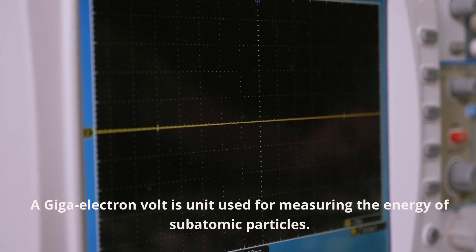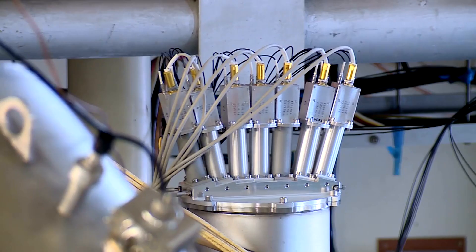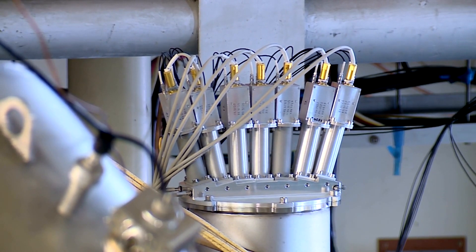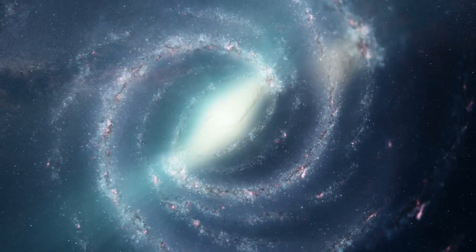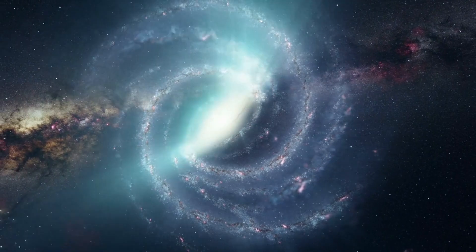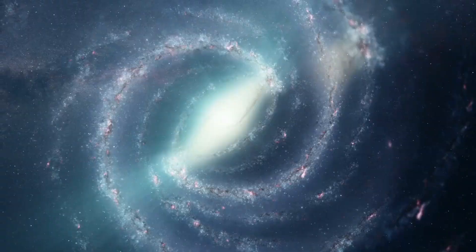A giga-electron volt is a unit used for measuring the energy of subatomic particles. One giga-electron volt is equal to 10^9 electron volts. The Large Hadron Collider, or LHC, the most powerful particle accelerator to date, operates at energies up to a few tera-electron volts, or TeV—orders of magnitude lower than the Planck energy. Assuming microscopic black holes can be formed in high energy particle collisions, they would likely evaporate almost instantaneously due to Hawking radiation, existing for mere fractions of a second before disintegrating into a spray of particles. This existence makes the detection of direct evidence extraordinarily difficult.